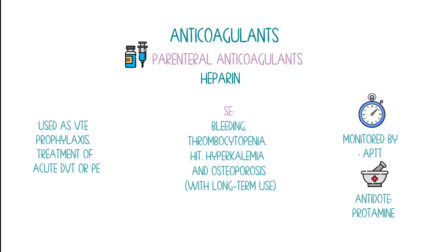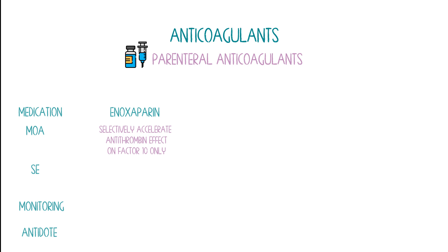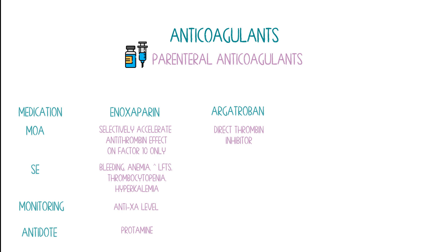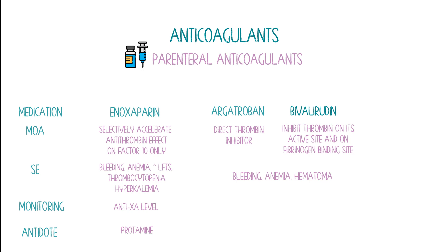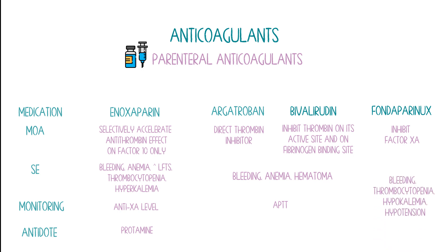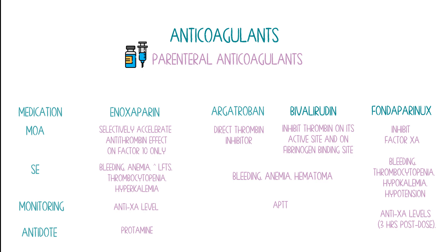Then we have low molecular weight heparin, like enoxaparin — it selectively exerts antithrombin's effect on factor 10 only. Side effects include bleeding, anemia, elevated LFTs, thrombocytopenia, and hyperkalemia. It is monitored by anti-Xa levels and the antidote is protamine. Then we have argatroban, a direct thrombin inhibitor, and bivalirudin, which inhibits thrombin at its active site and at the fibrinogen binding site. Both cause bleeding, anemia, and hematoma, and both are monitored by aPTT. Finally, fondaparinux inhibits factor Xa. Side effects include bleeding, thrombocytopenia, hypokalemia, and hypertension, monitored by anti-Xa levels.